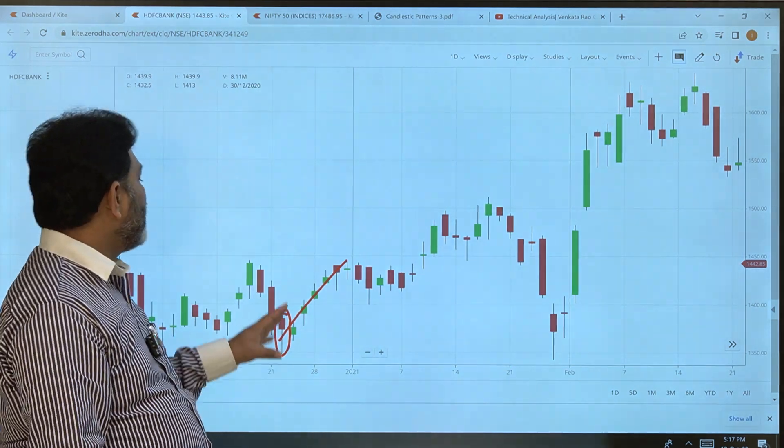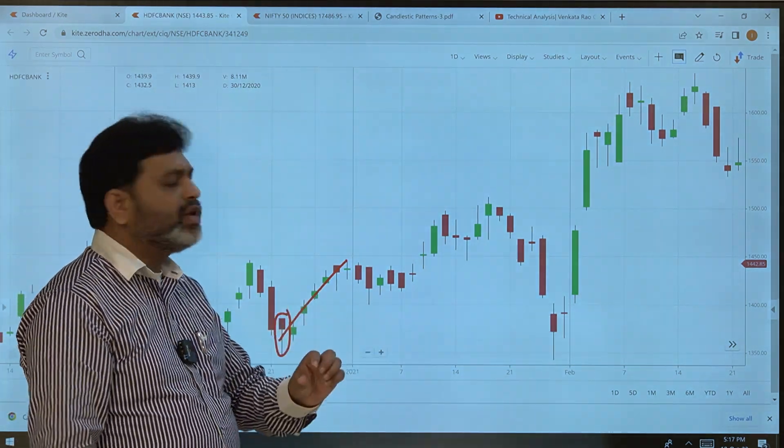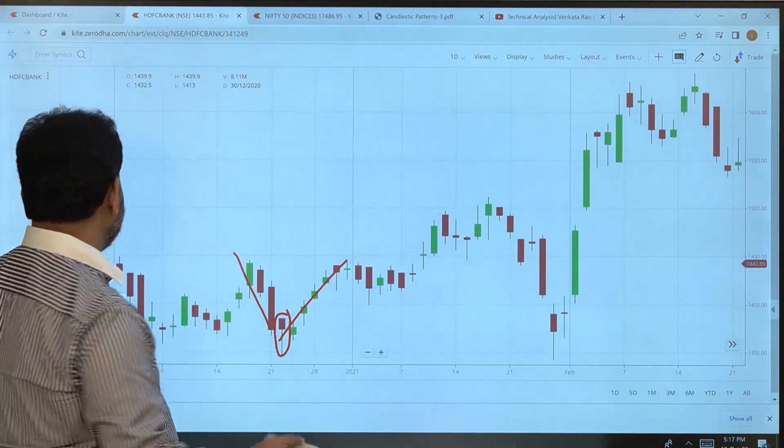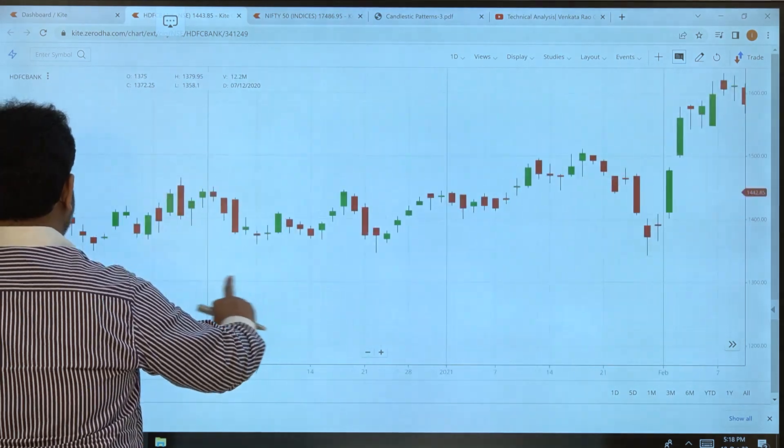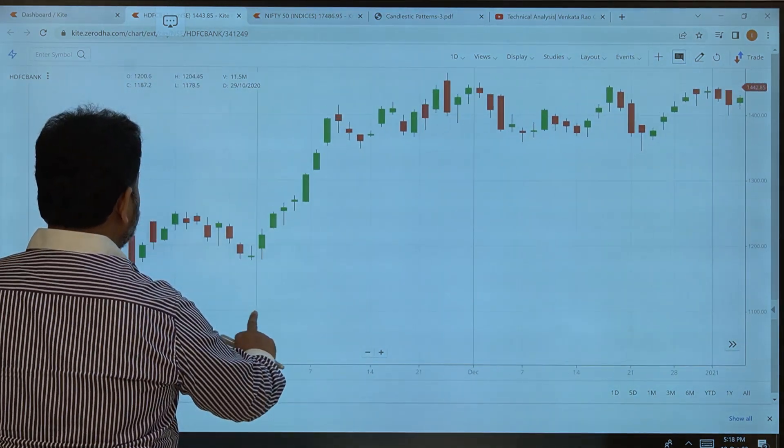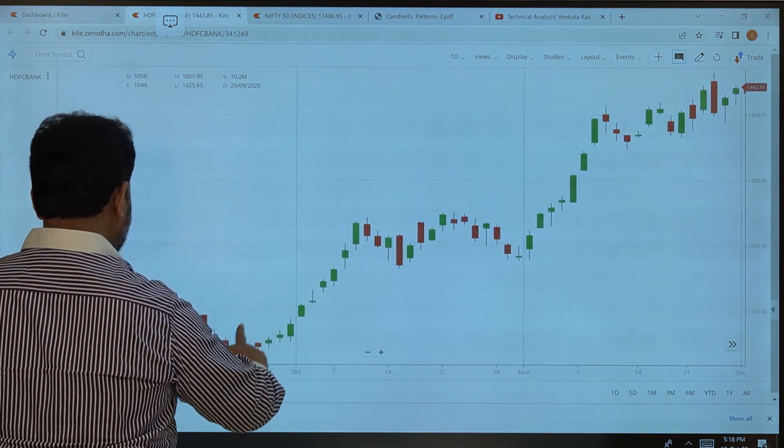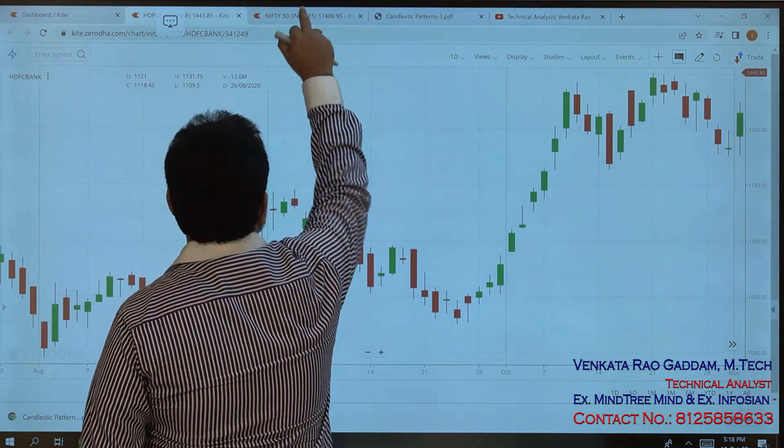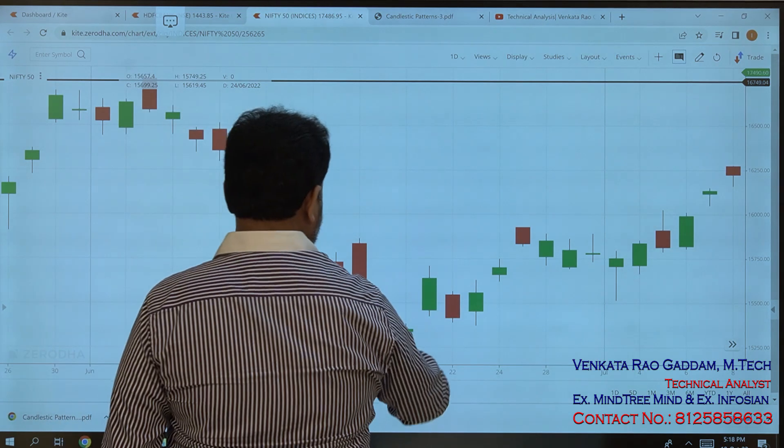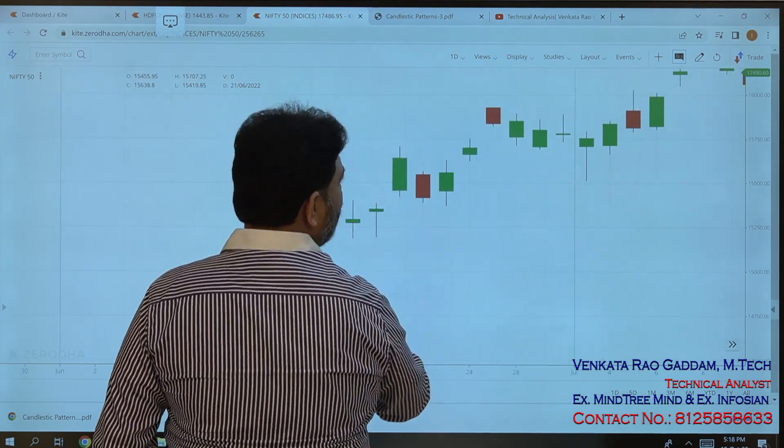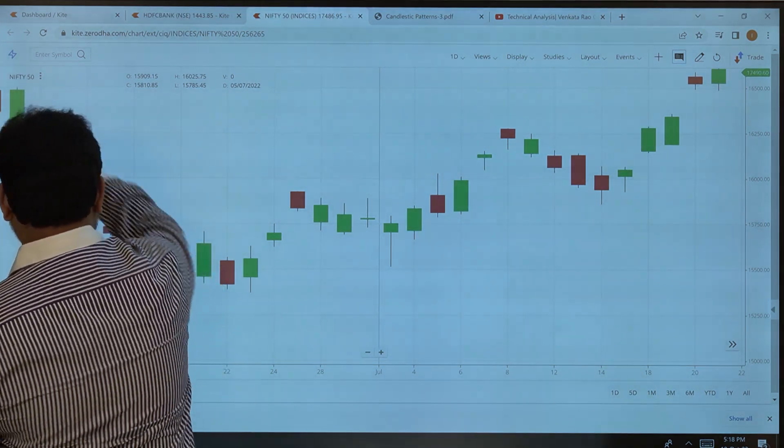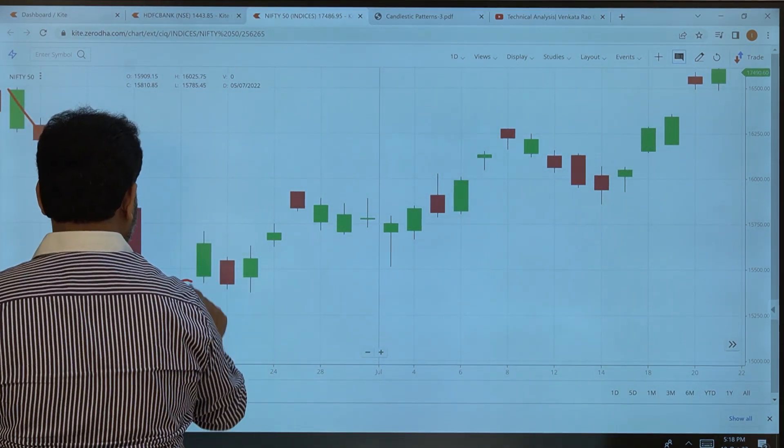Here's the real body and here's the bottom wick. Whether it's red color or green color doesn't matter. Let's look at the Nifty index, Nifty one day chart. Here in a downtrend, a hammer formed.